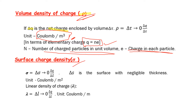Surface charge density sigma is denoted by the letter σ. Sigma is equal to del q divided by del s, where del s is a surface with negligible thickness. The unit of surface charge density is coulombs per meter squared (C/m²). Volume density uses meter cube, and surface charge density uses meter squared.